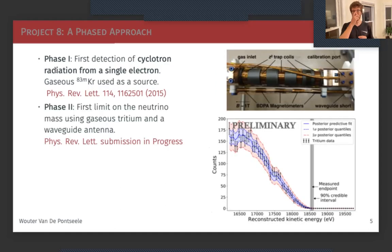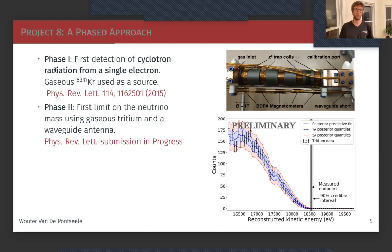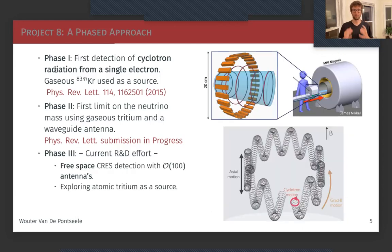In the second phase of the experiment, which is almost completed, we used tritium as a source gas for the first time and we're therefore able to put a neutrino mass limit, albeit not competitive yet.